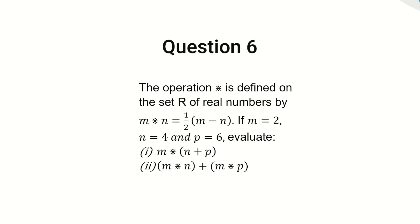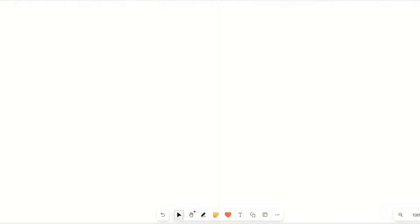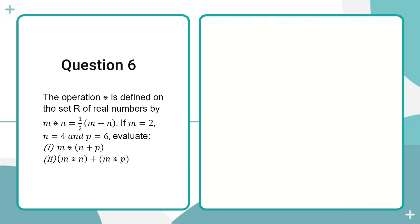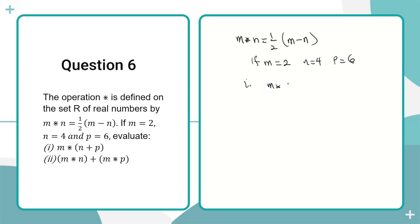So let's look at how we can solve this question. We've been given the operation m★n = ½(m − n). Remember that m = 2, n = 4, and p = 6. We have to find m★(n + p).